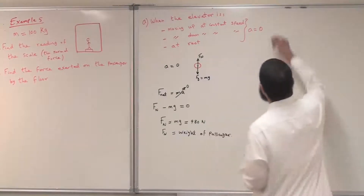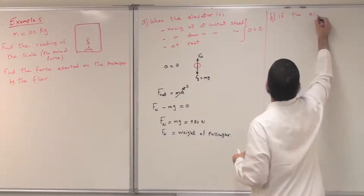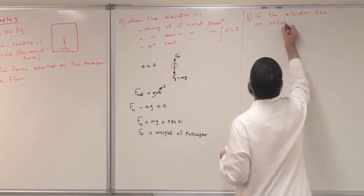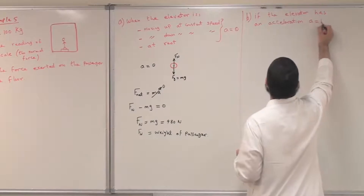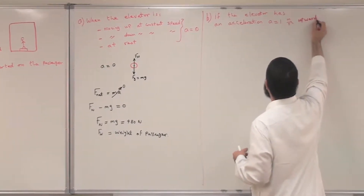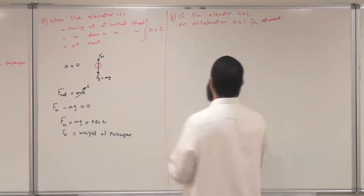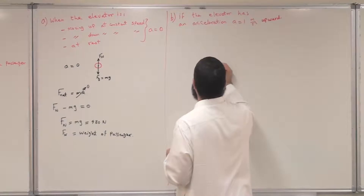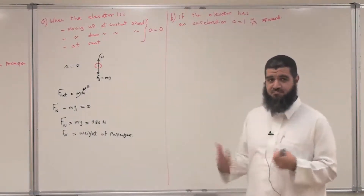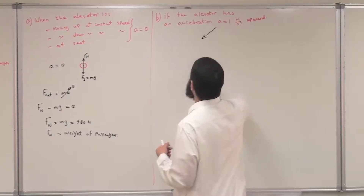Let us go to Part B. If the elevator has an acceleration of magnitude a = 1 meter per second squared directed upward, we want to find the normal force on the passenger. When can we have this upward acceleration? There are two situations.